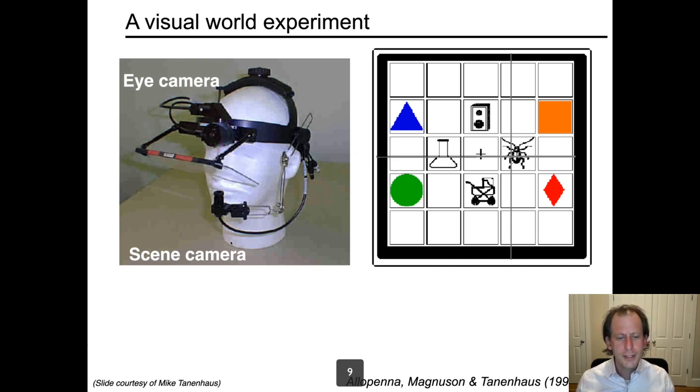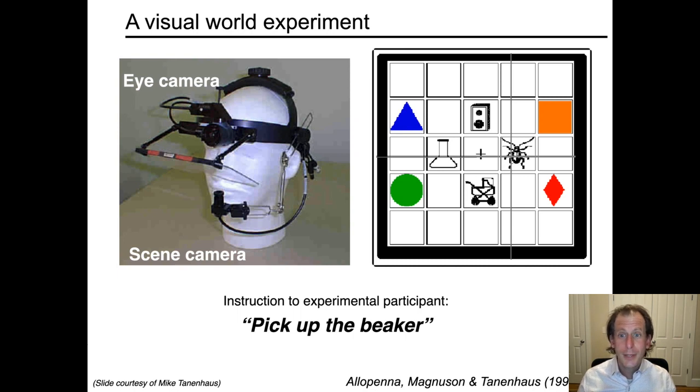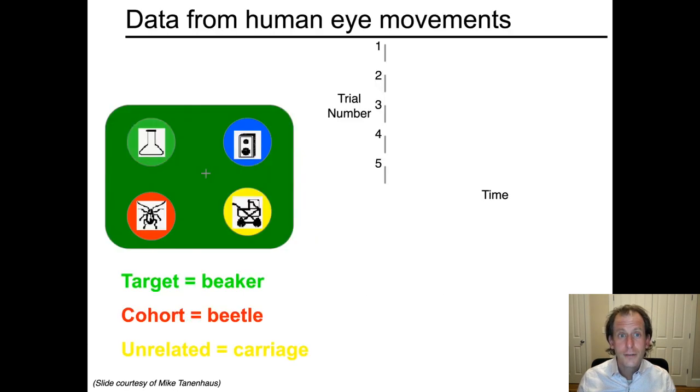So in a visual world experiment, this is one of the classic studies that has been done. This is an example of looking at the time course of individual spoken word recognition. So how long does it take to recognize a word like 'beaker' in the time course of hearing it as the word 'beaker'? The instruction to the experimental participant might be something like 'pick up the beaker' and the experimenters simply look at the eye movements during this period. This is done over many different trials and the information from the trials is aggregated to get fine-grained average time course information.